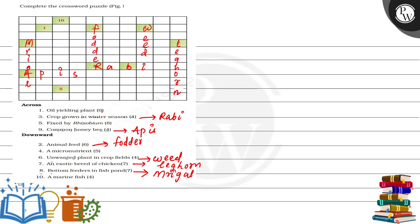And then what we have done here is our oil yielding plant. This one is our oil yielding plant, so we can write sunflower in this case because here is our F and here is our W. So this is our sunflower. And which one is fixed by rhizobium? This one is our nitrogen, which is fixed by rhizobium. So where is our 5? This one is our nitrogen.